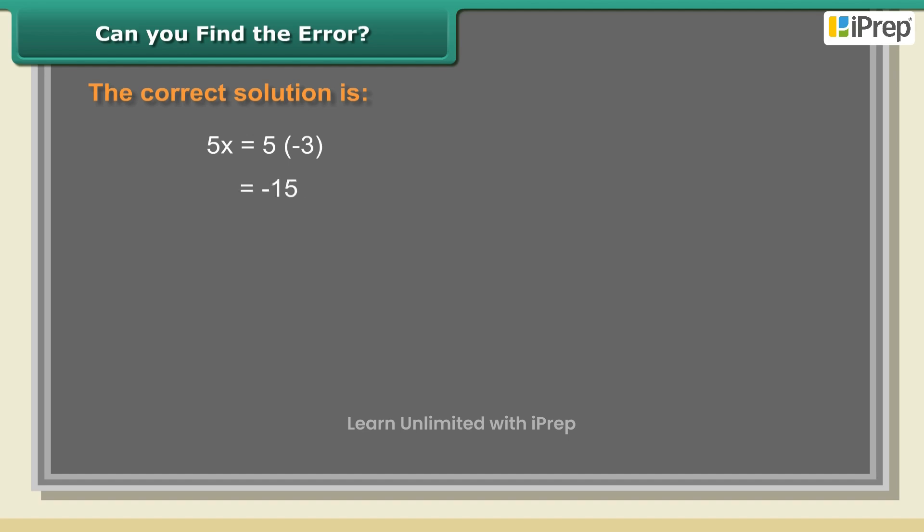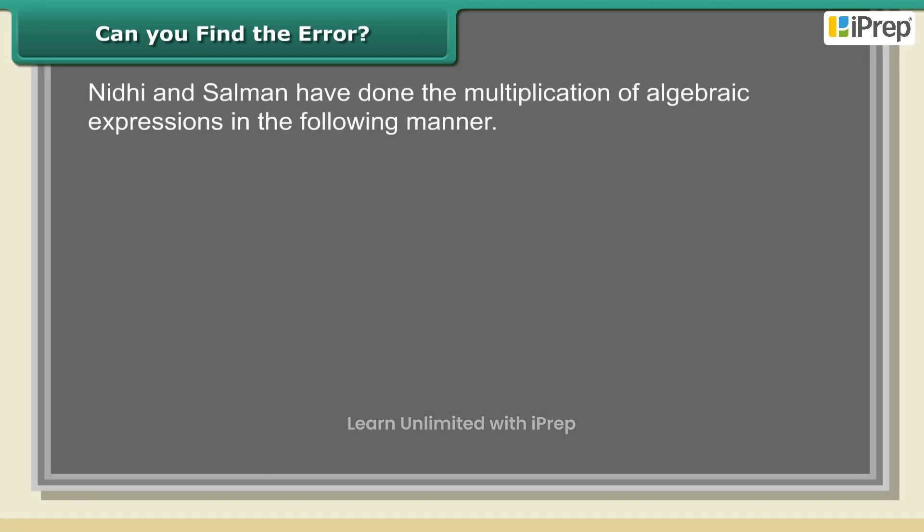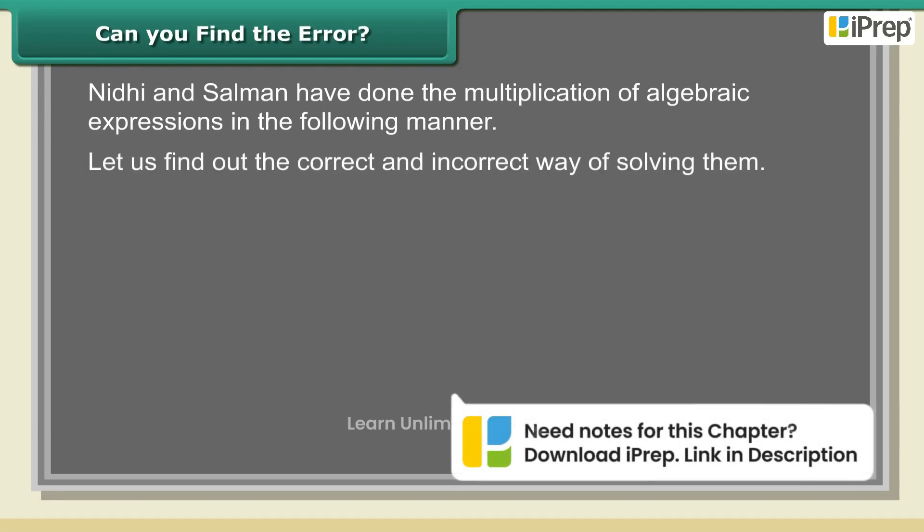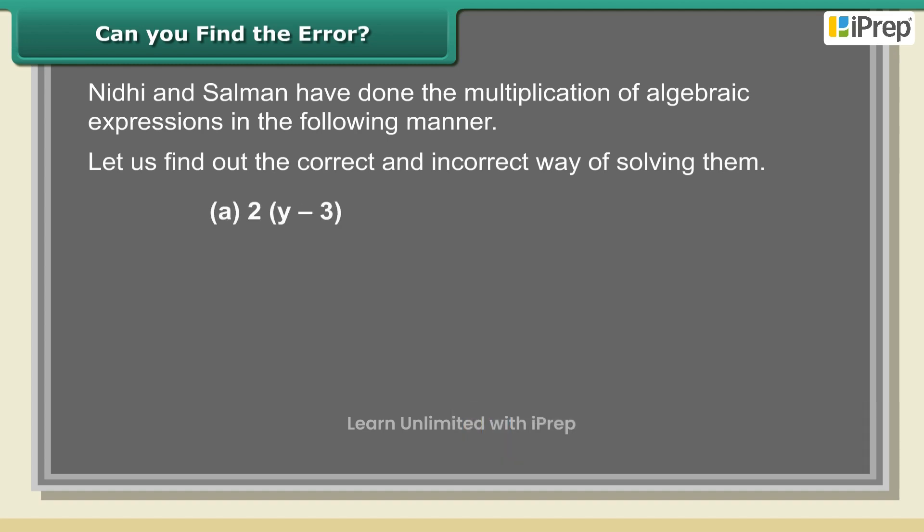Nidhi and Salman have done the multiplication of algebraic expressions in the following manner. Let us find out the correct and incorrect way of solving them. (a) 2(y - 3) Distributive Rule Subtraction: Simplify 2(y - 3) = 2 × y - 2 × 3 = 2y - 6.